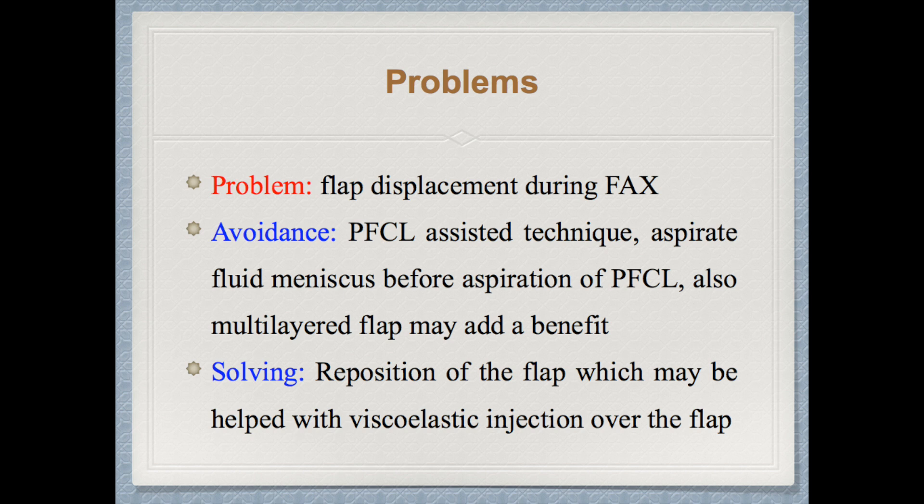To solve this problem, simply reposition the flap, which may be helped with viscoelastic injection over the flap to keep it in place. After performing the inverted flap technique and going for fluid-air exchange, aspirate the fluid in the interface between the air and the peripheral PFCL. Keep the fluid needle at the edge of this bubble and aspirate the fluid at the side of the PFCL bubble, waiting until the peripheral PFCL bubble merges with the fluid. Aspirating the peripheral PFCL prematurely can cause fluid to get on the surface of the macular hole ILM flap and may displace the flap.